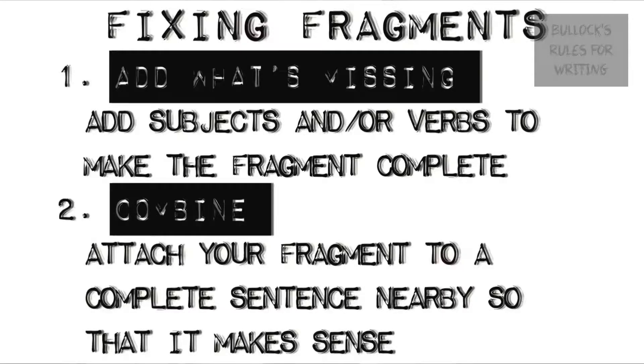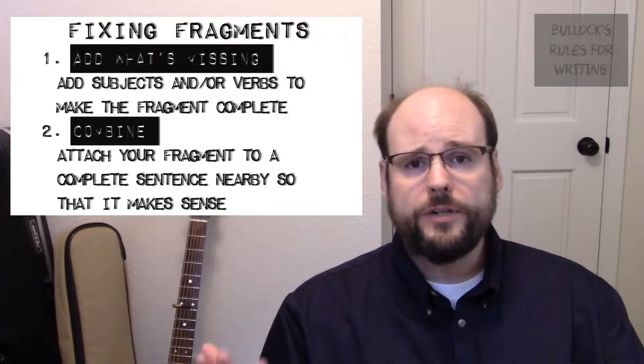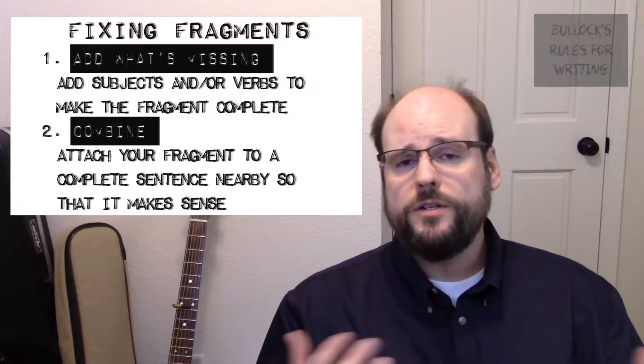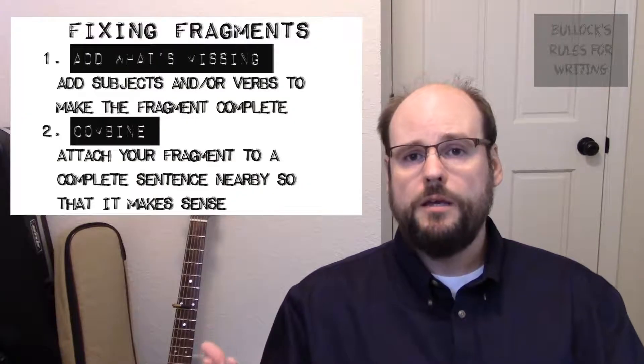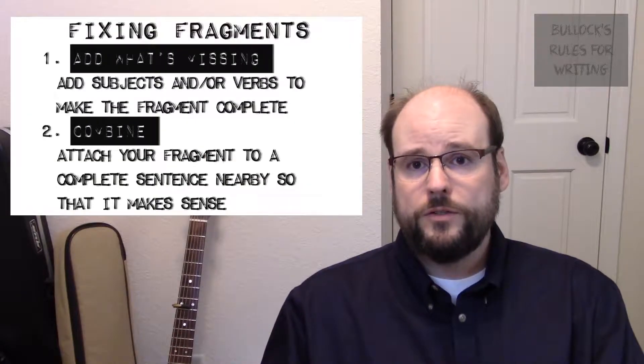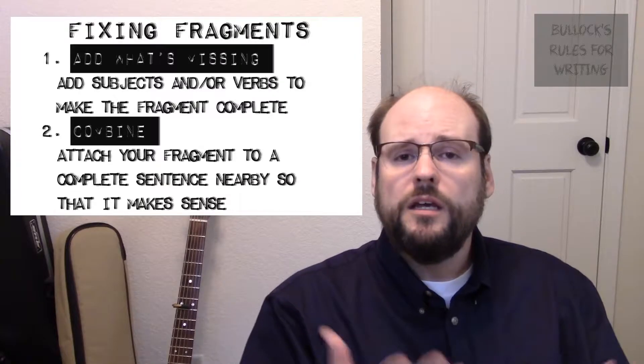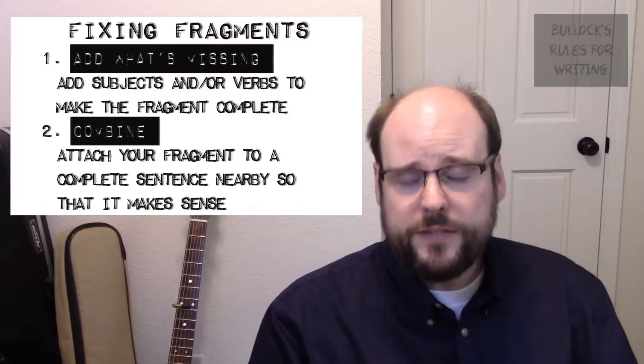But one, a really easy one, is just to add whatever is missing. So if we go back to our example about the mall, we could say something like this. I bought them at the mall. See? By adding the subject, I, and a verb, bought, we've created a complete sentence.